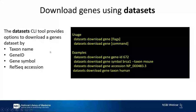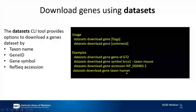For genes, we also have our command line tool. Again, the command is very simple: 'datasets download gene,' and you can do that by gene ID, by gene symbol like BRCA1 with the taxon group specified, or by RefSeq accession — the NM or NP transcript and protein accession. You can also download the entire gene dataset for any particular taxon group: 'datasets download gene taxon human' will give you all the RefSeq genes for humans.